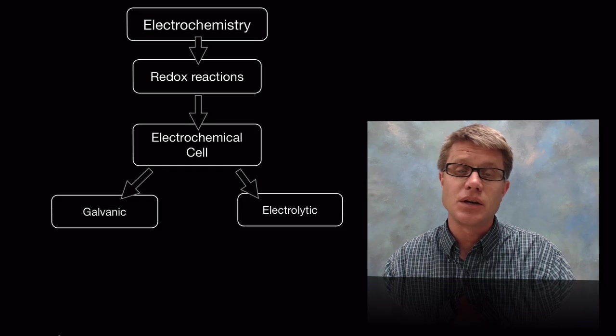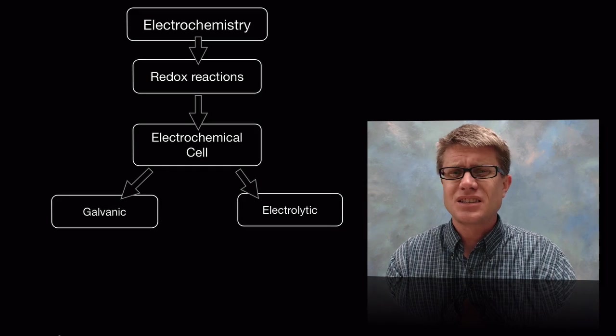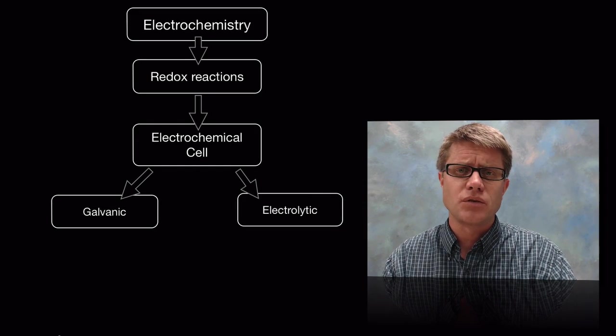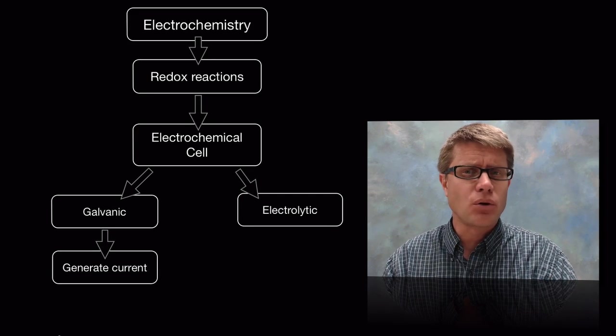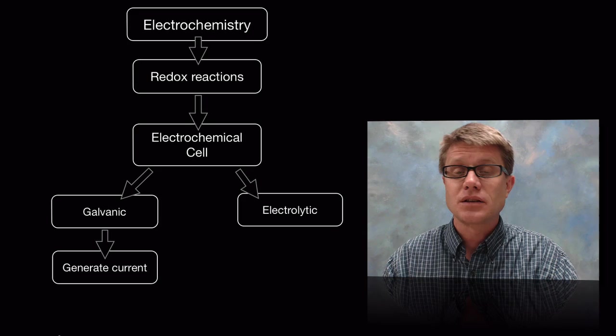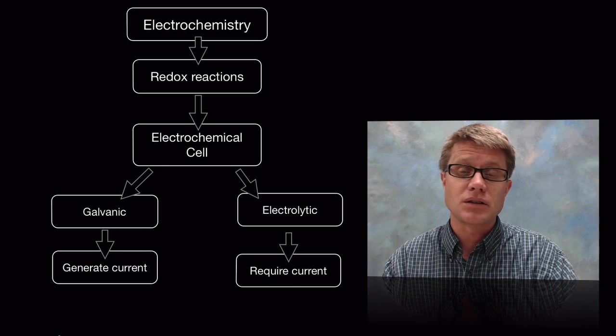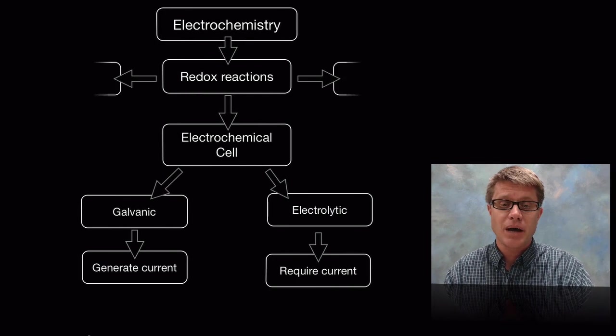That cell could either be a galvanic cell. It's sometimes also referred to as a voltaic cell. An example could be a battery, and that's going to generate current. Or we could have an electrolytic cell and that's going to require current. An example could be a rechargeable battery.